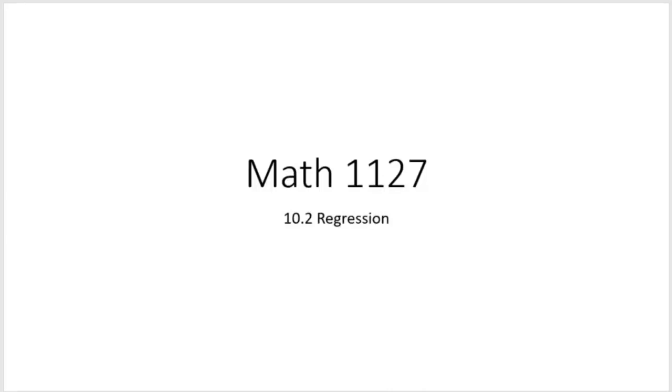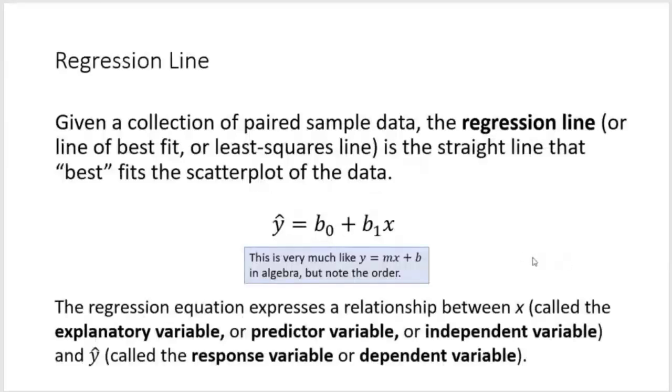Last time we looked at correlation coefficients to determine if there really may be linear correlation. This time, if there is linear correlation, then we would want to probably calculate the regression equation. So that's what this lesson is about. We're going to revisit some of our previous examples about that chocolate and the Nobel.